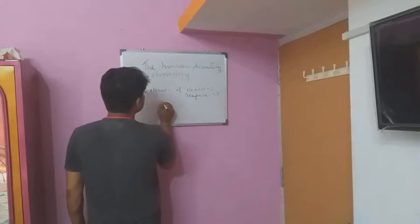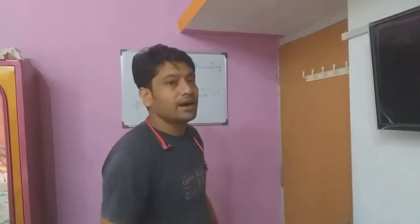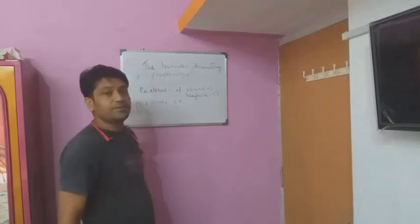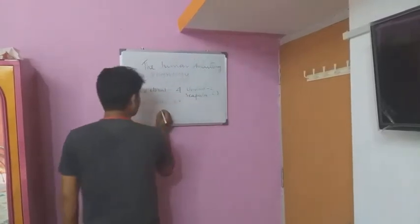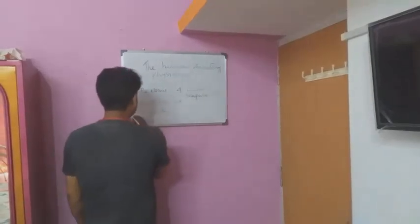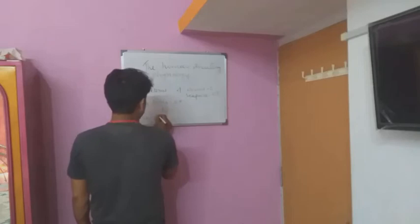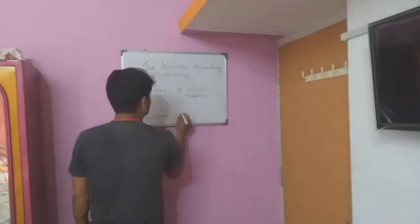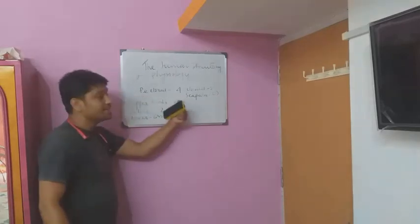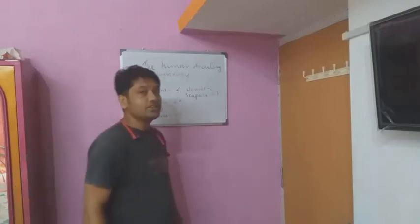The upper limbs have 60 bones. The pelvic girdle has 2 bones. The lower limbs also have 60 bones. So: 4 plus 60 plus 64 plus 60 equals 124, and with the pelvic 2, the total is 126 bones.